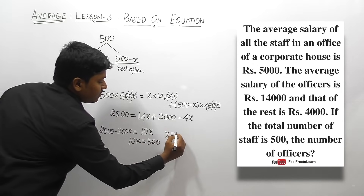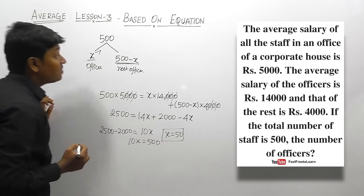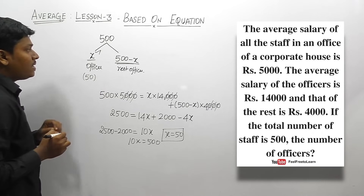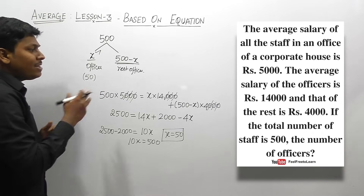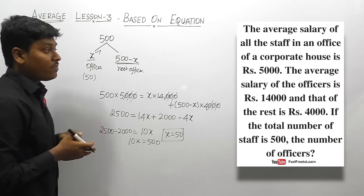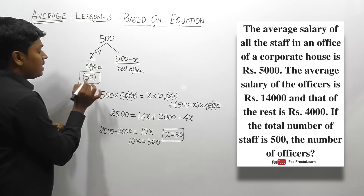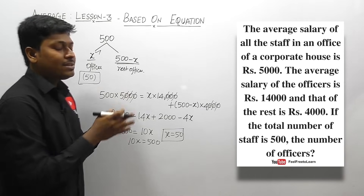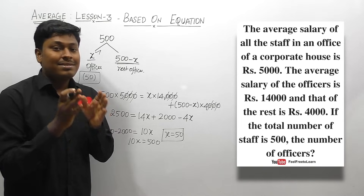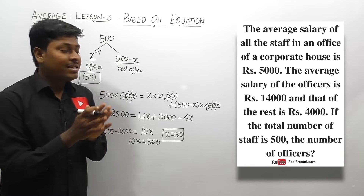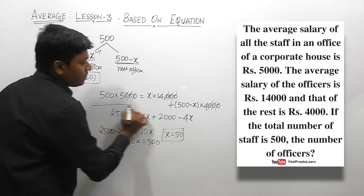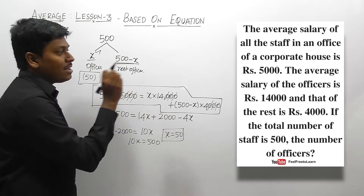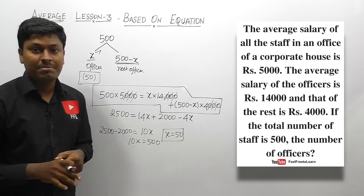Finally, x equals 50, meaning there are 50 officers in the corporate house and the remaining 450 are the rest of the staff. We have now solved all 5 different questions in lesson number three. This lesson is completely based on an equation model — initially we need to frame the equation correctly, and then solving all questions based on this pattern becomes simple.